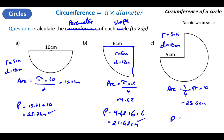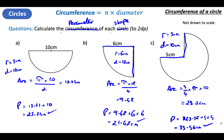But we want the perimeter, not just the arc — so I need the two flat bits: five and another five. Showing my working: 23.56 plus one flat edge of 5 plus the other flat edge of 5 — which is 33.56 centimeters as the perimeter.